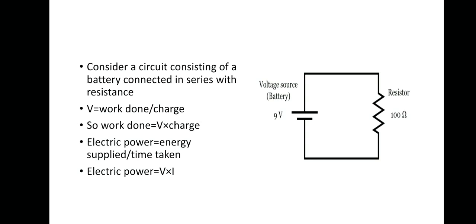As the positive charge moves through the resistor and arrives at low potential, the battery lifts the charge back up to high potential again. This process repeats continuously — the charge is raised to high potential, moves through the resistor, dissipates energy, returns to low potential, and the cycle continues.